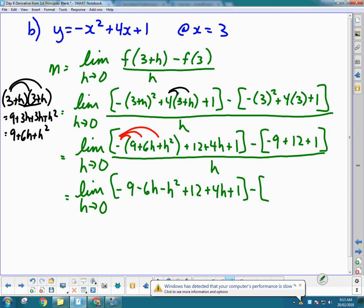Minus, now I'm going to add those numbers together, so negative 9 plus 12 plus 1 is, well, actually, I'm going to leave it.